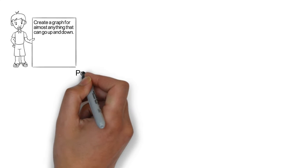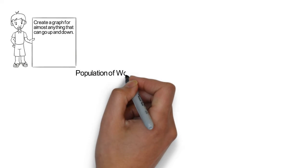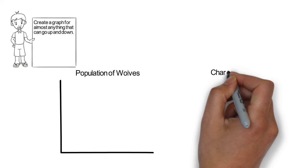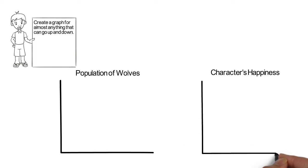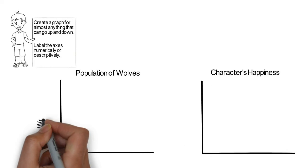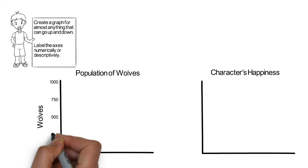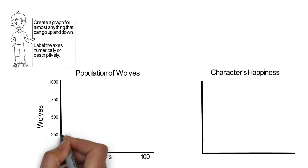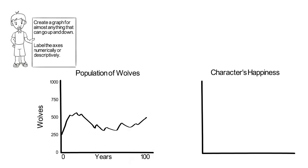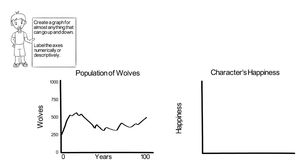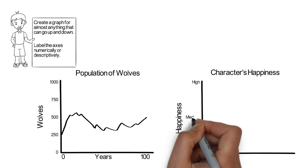Create a graph for almost anything that can go up and down. For example, a population of wolves in a national park, or a literary character's level of happiness. Label the axes numerically or descriptively, depending on the purpose.